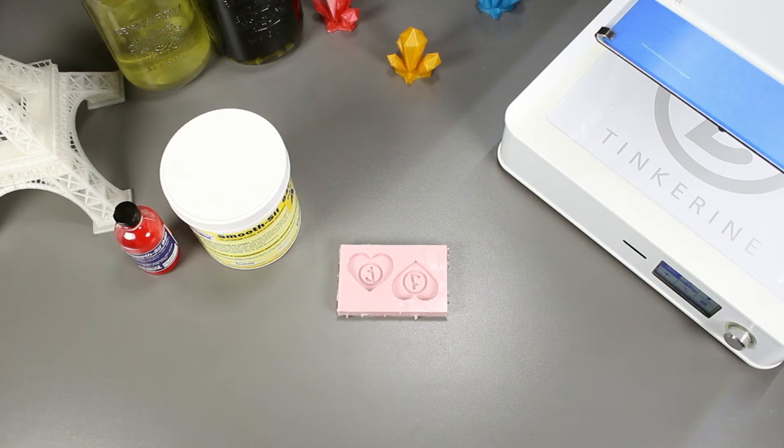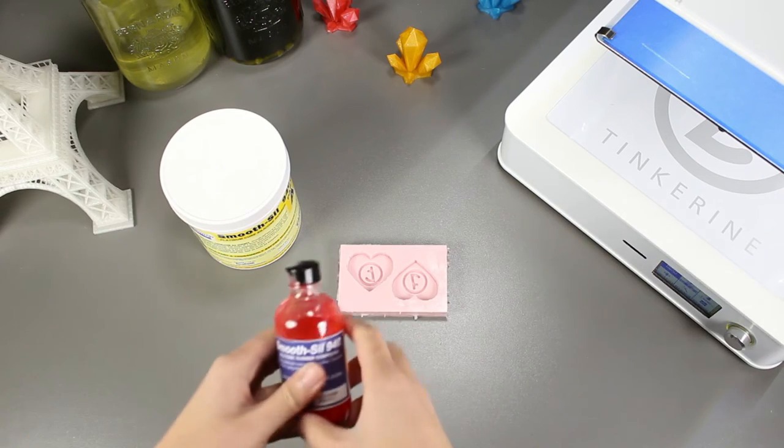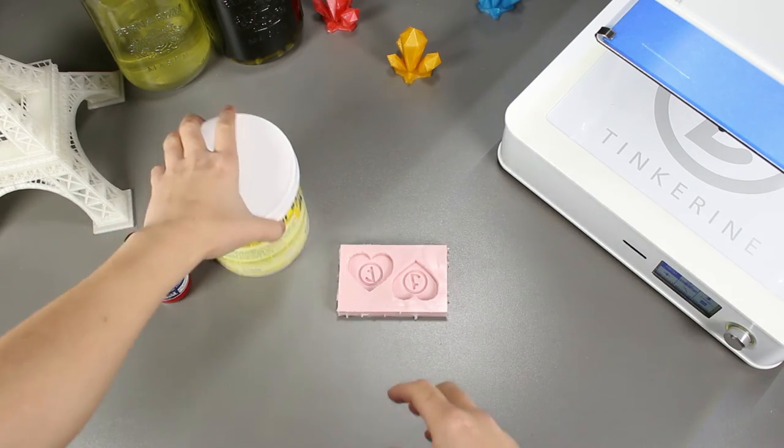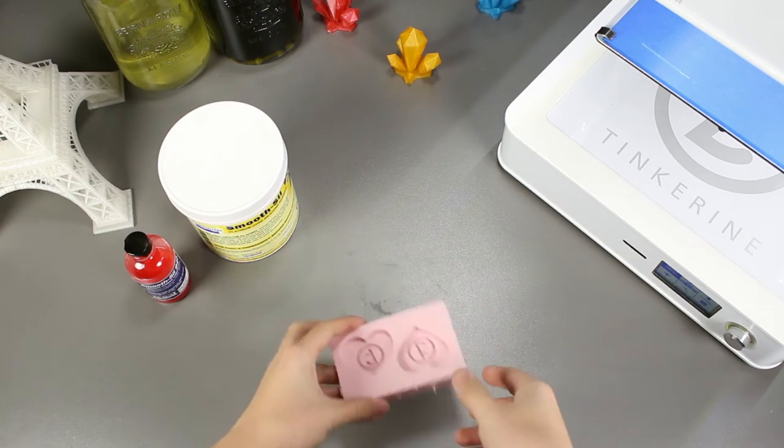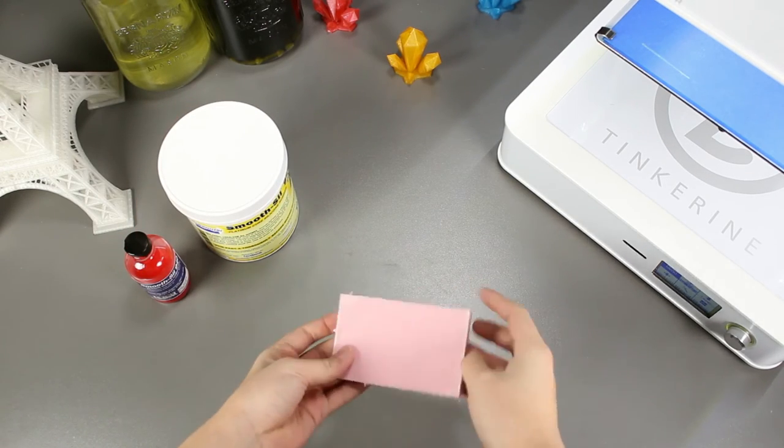Well there we have it. We tried making a silicone mold and it came out really nice. It's a very quick and easy way to make a silicone mold. Next, we will have to test out the mold but that will be another episode.